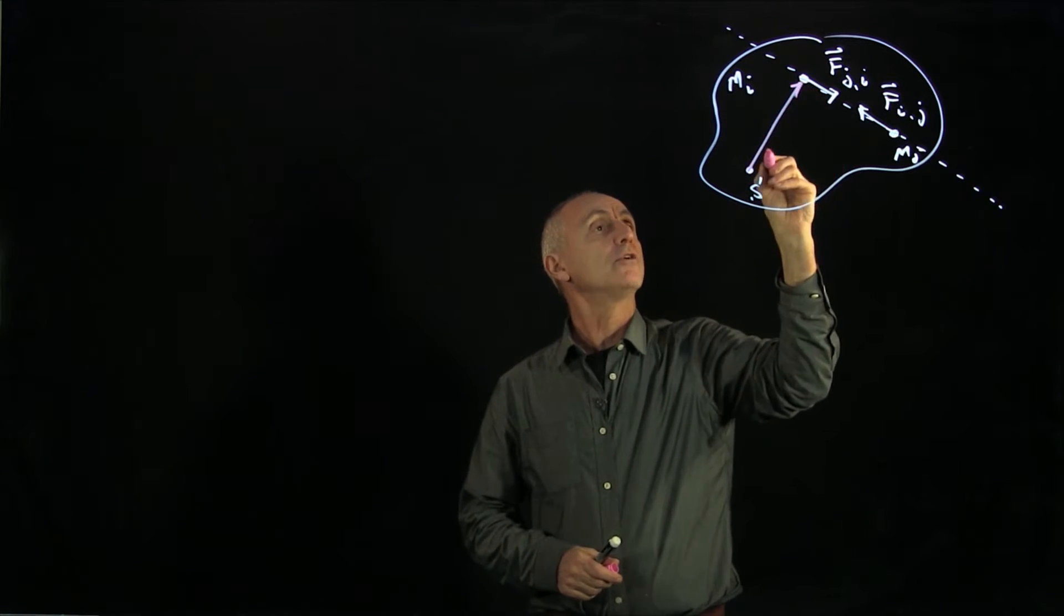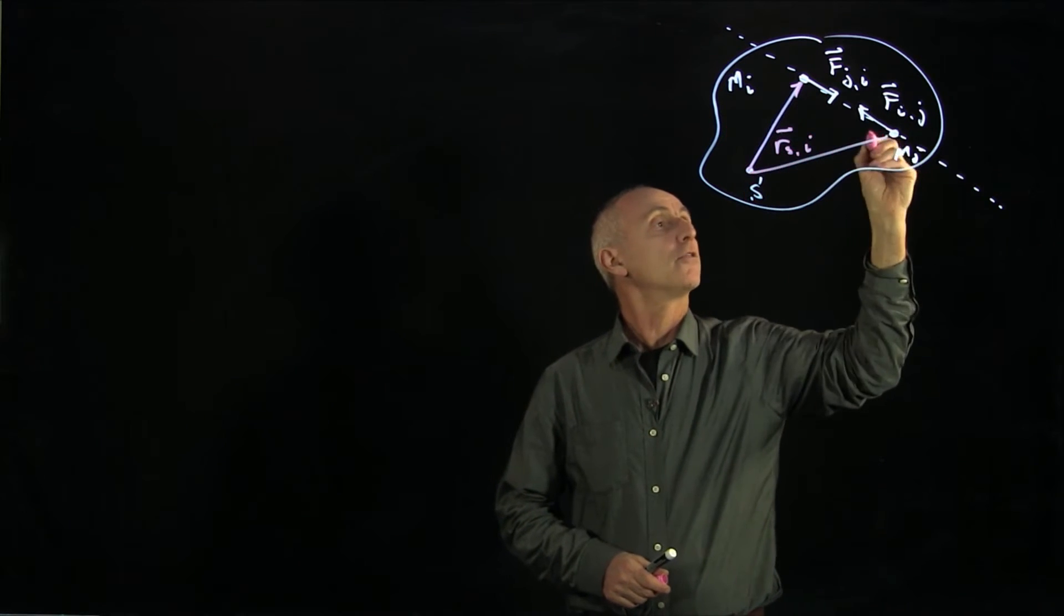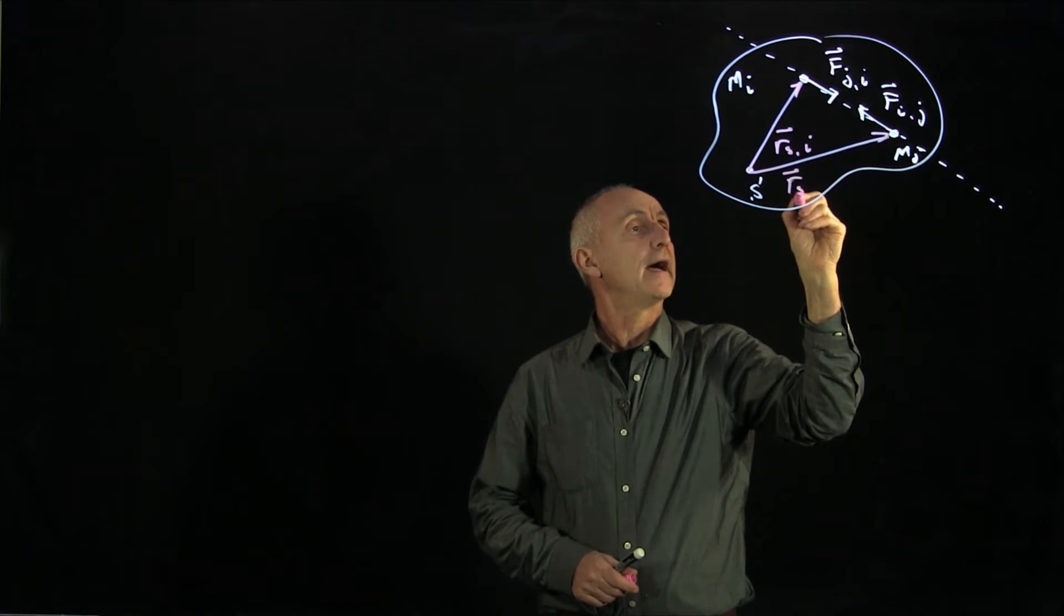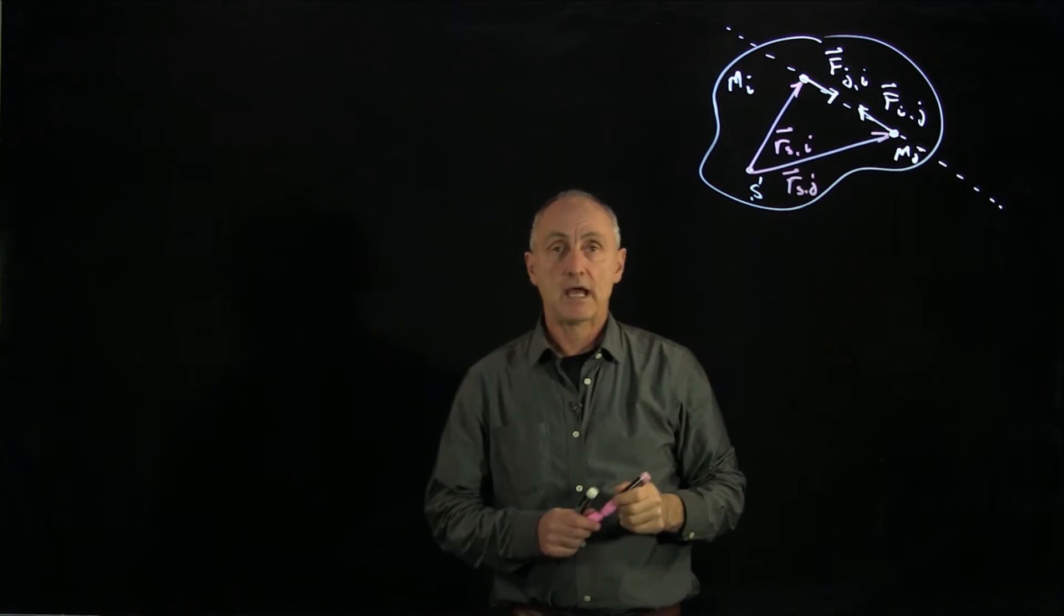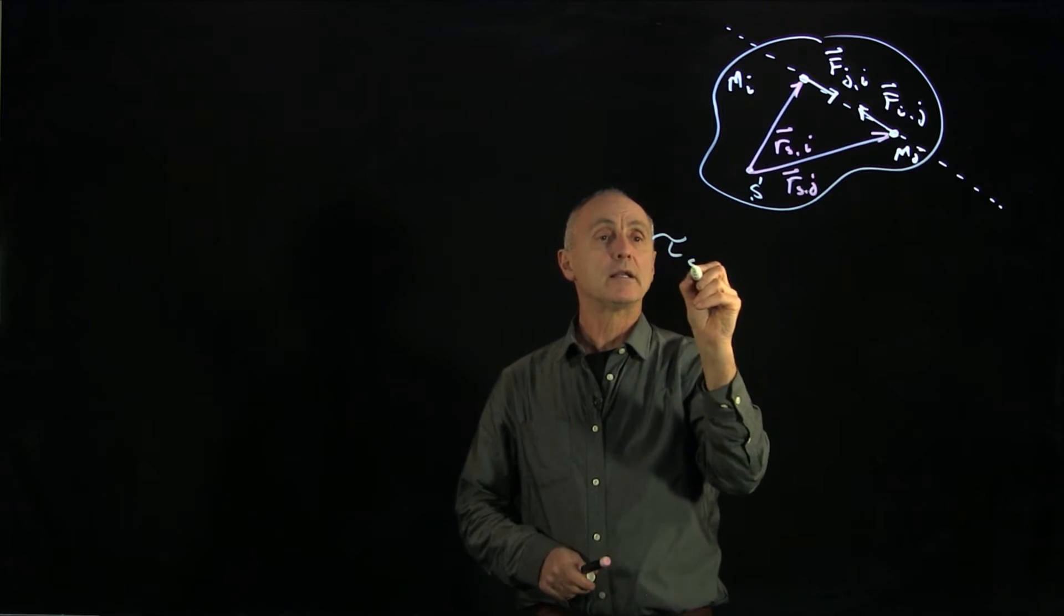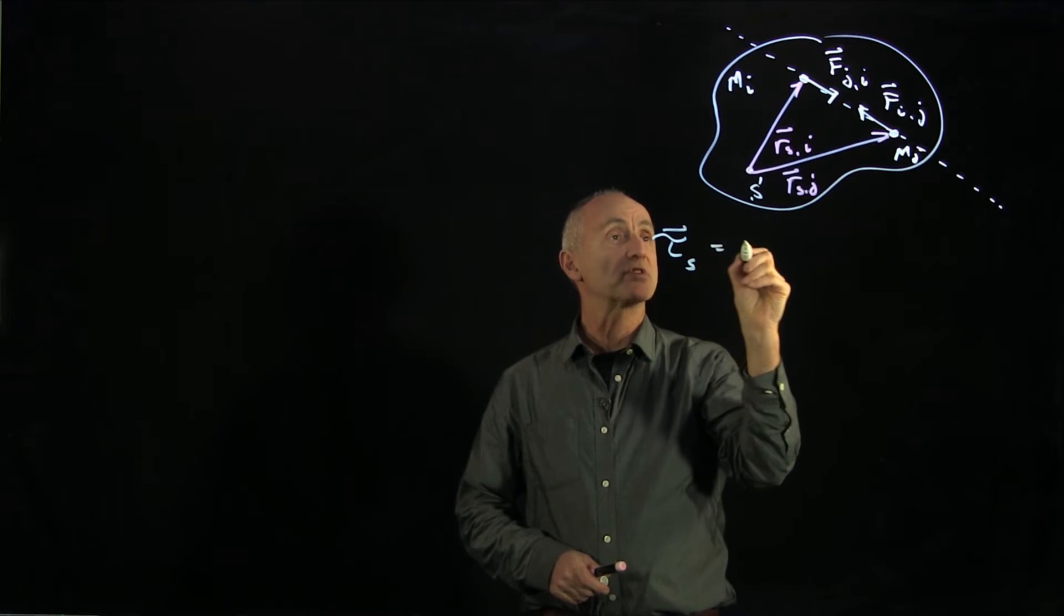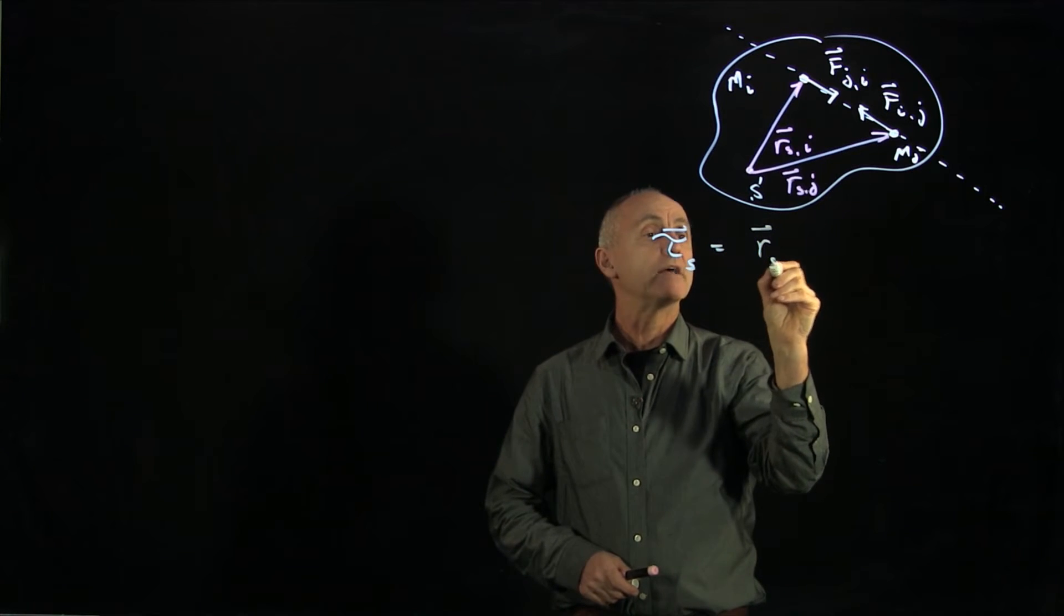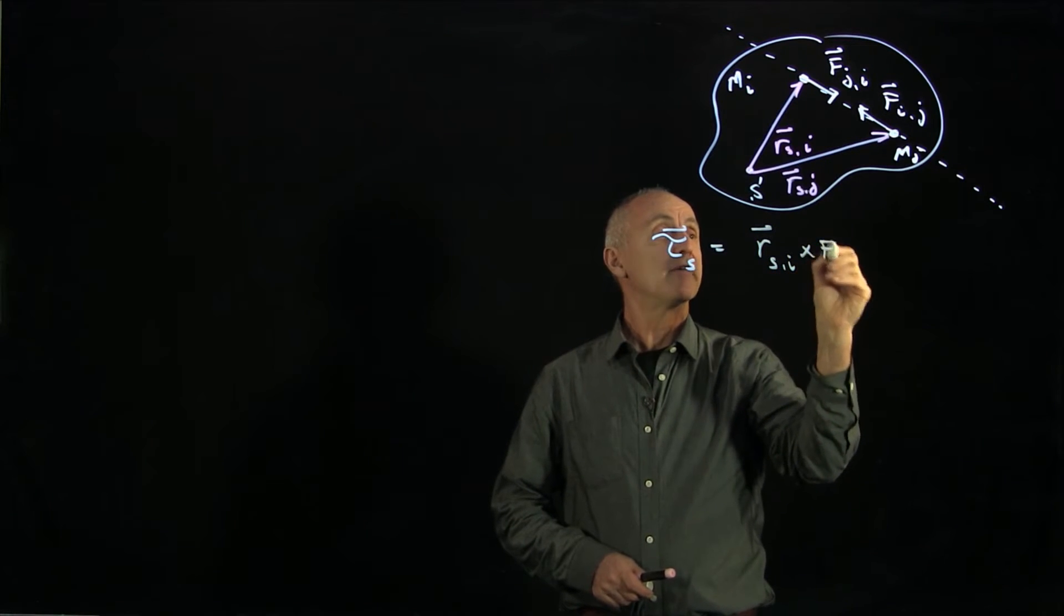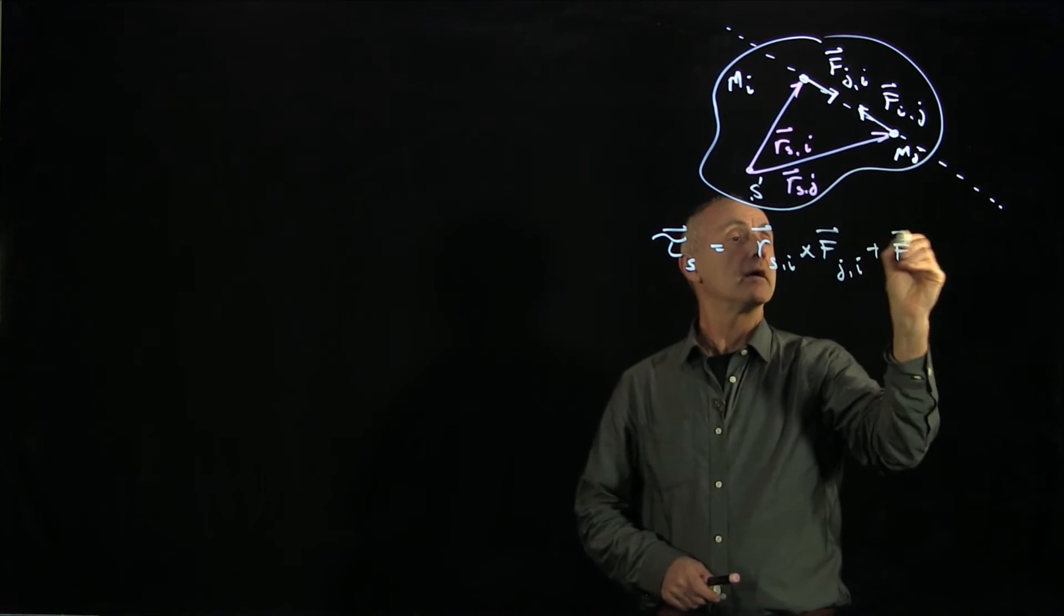We draw our vector from RSI and our other vector RSJ. And now we're in position to add these two torques. So we have the torque on S due to this pair is equal to the sum of RSI cross FJI plus